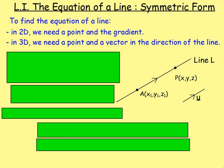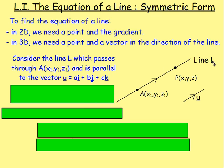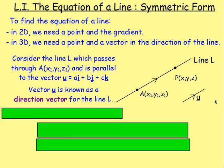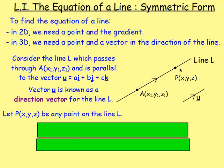Let's consider this diagram. We've got this line L with the points A and P, and we've also got this vector U. Consider line L which passes through point A with the coordinates X1, Y1, Z1, and it's parallel to vector U. Vector U can be written as AI plus BJ plus CK. Point P is just a random point on the line with coordinates X, Y, Z.